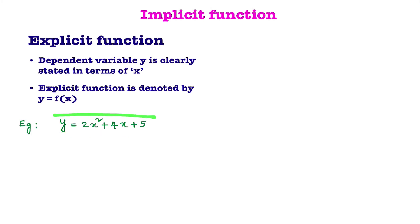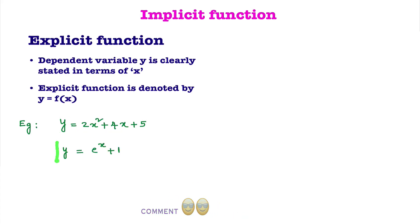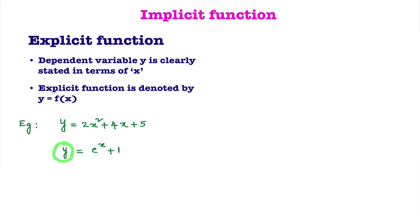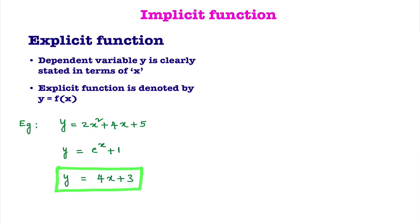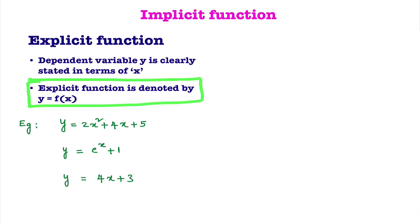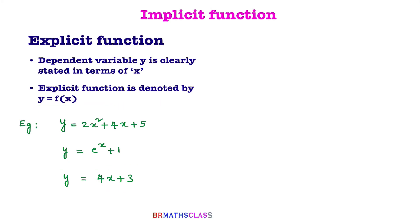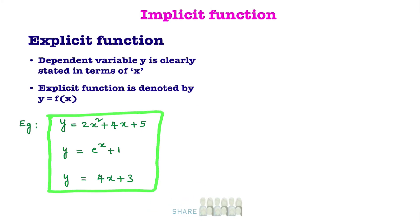In an explicit function, dependent variable y is clearly stated in terms of x. Second example: y = eˣ + 1. By seeing this example, y is clearly specified in terms of x — yes, so this is an explicit function. Another example: y = 4x + 3. Again, y is clearly specified in terms of x. Dependent variable y is clearly stated in terms of x — explicit function is denoted by y = f(x).